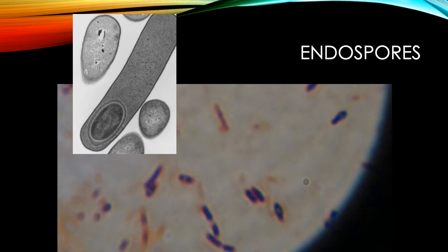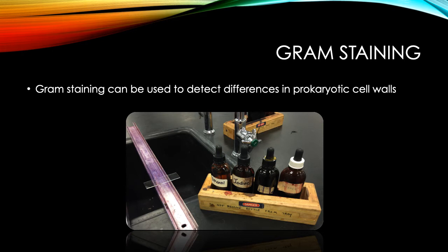Here's what an endospore looks like: the bacteria basically balls itself up on one end — sometimes in the middle. It can survive really nasty conditions. Looking at the microscopic picture, there's one with a little bulge in the middle and one with a little bulb on the end — those are endospores, captured right here in our lab. That's how they survive harsh conditions.